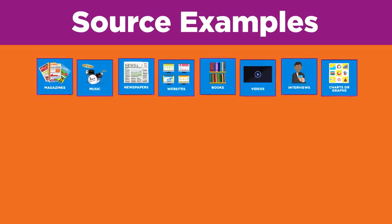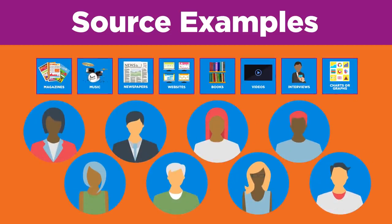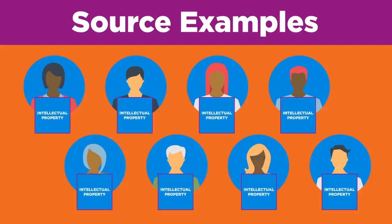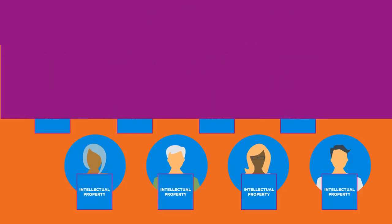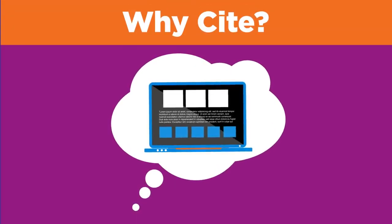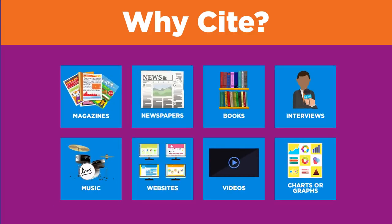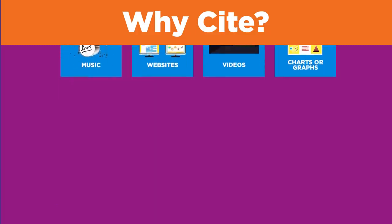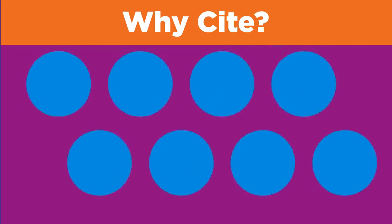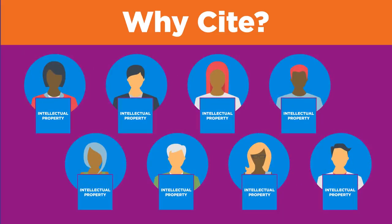All of these sources were created by someone. Each work belongs to the person who created it — the work is that person's intellectual property. When you find a useful bit of information, you may be thinking: I found this on the internet, it was free, why do I need to cite it? Remember, it does not matter where you got the information or whether you paid for it. It does matter that you're using someone else's intellectual property.